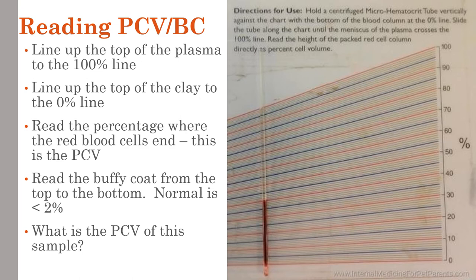When we read the PCV, we line up 100% at the top of our blood volume and the bottom at the top of the clay. Then we look at where the red meets the Buffy coat and read from there. Looking at this example, the red ends right about at 40%, so this is a 40% PCV — totally within the normal range. We can also barely see the Buffy coat, which looks to be about 1%, also totally within normal range.